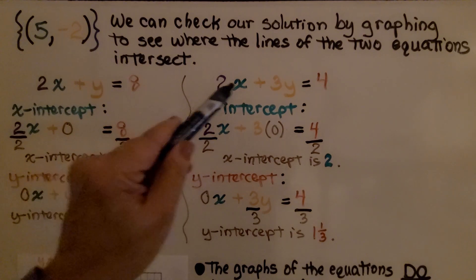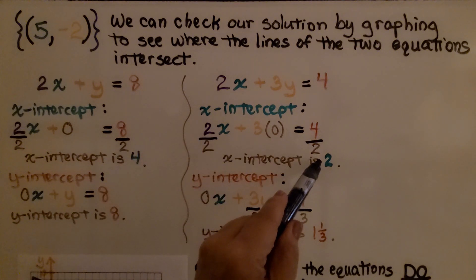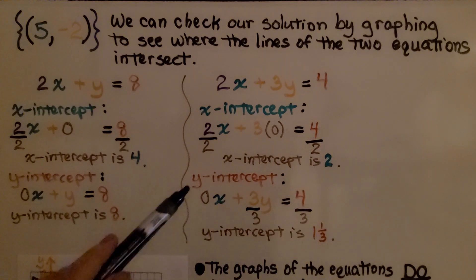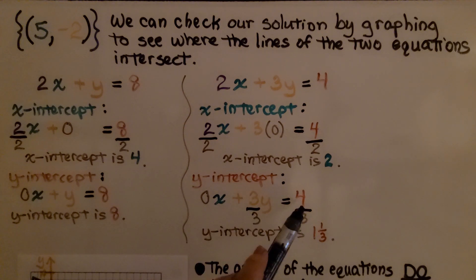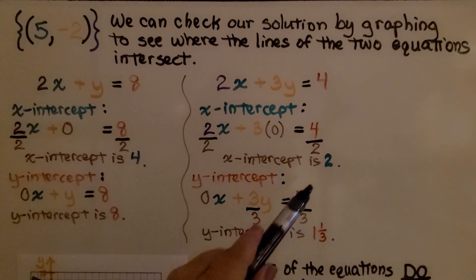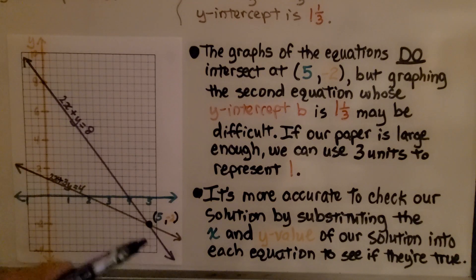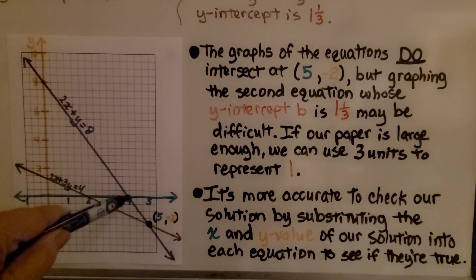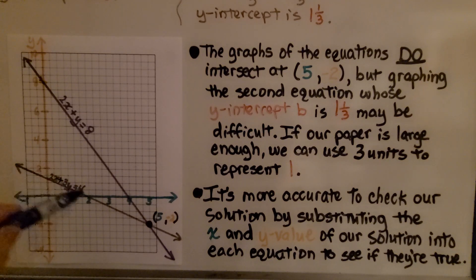For the second equation, we find the x-intercept by setting y to 0: 2x equals 4, so x equals 2. For the y-intercept, we set x to 0, giving us 3y equals 4. Dividing by 3 gives 4 thirds, or 1 and 1 third. With an x-intercept of 4 and y-intercept of 8 for the first equation, and x-intercept of 2 and y-intercept of 1 and 1 third for the second, we graph both lines using a straight edge.